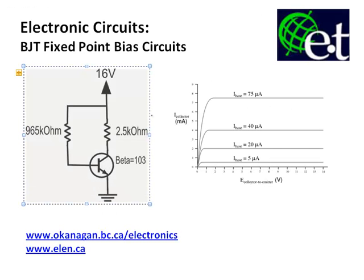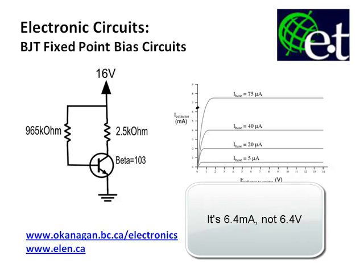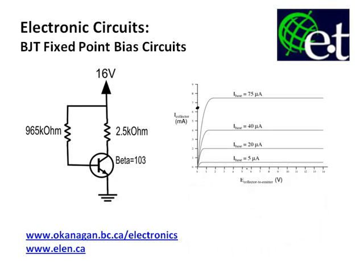Now we know the two extreme points of the load line. Plotting them on the characteristic curve diagram: IC_sat occurs when VCE is at zero volts, giving us 6.4 milliamps. The other point is zero collector current at a VCE of 16 volts. Connecting these two points gives us the load line, and our operating point will fall somewhere on it.